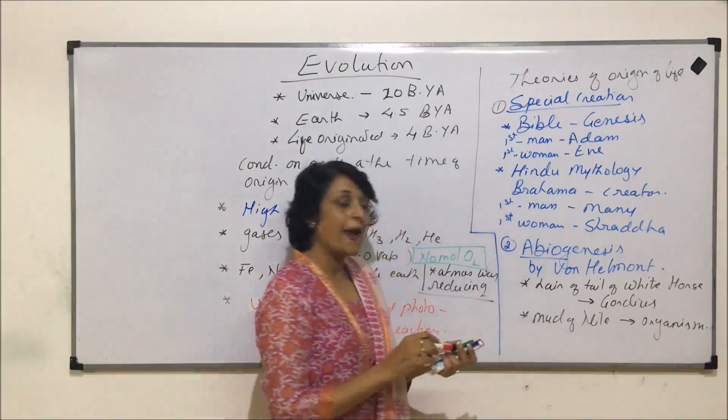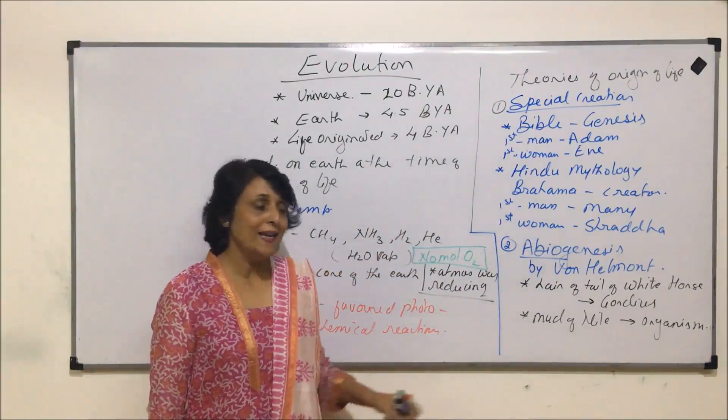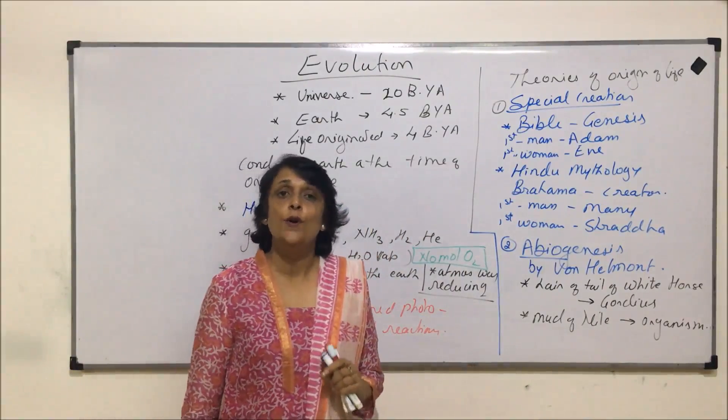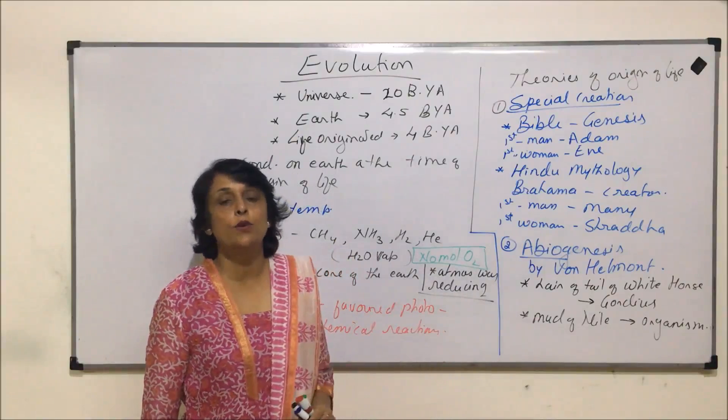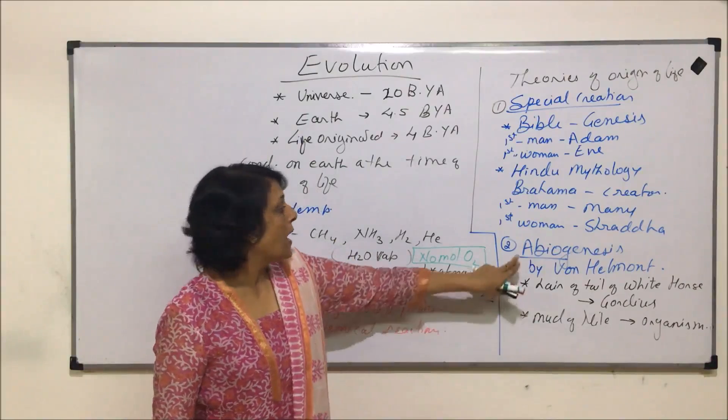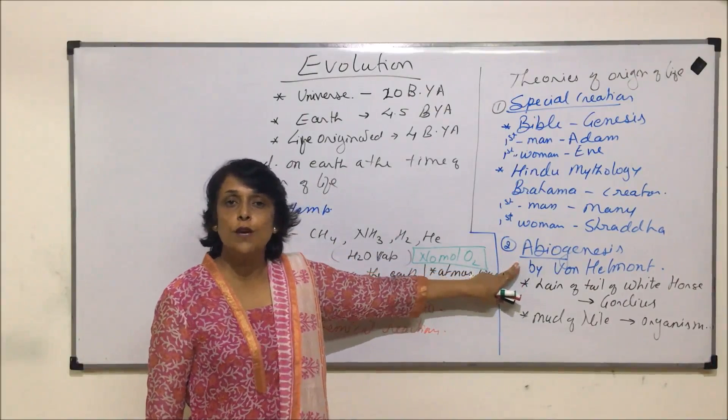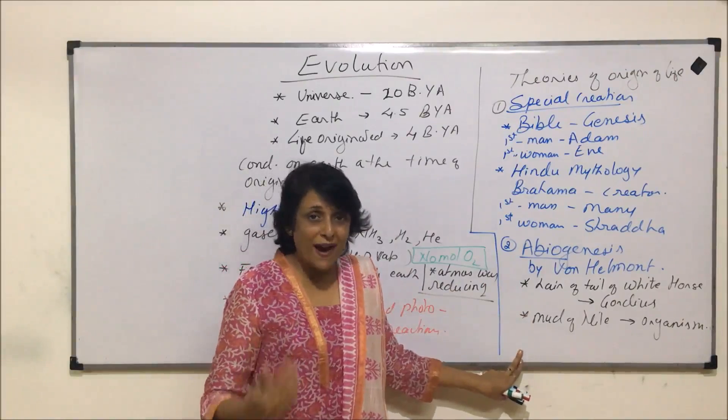Some scientists said that the mud of Nile river gave rise to various organisms. This theory of abiogenesis was disproved by the experiment which was done by Francesco Redi, and he put forth the next theory that was of biogenesis. According to abiogenesis, it was believed that life originated from non-living things. The next theory, which is biogenesis,